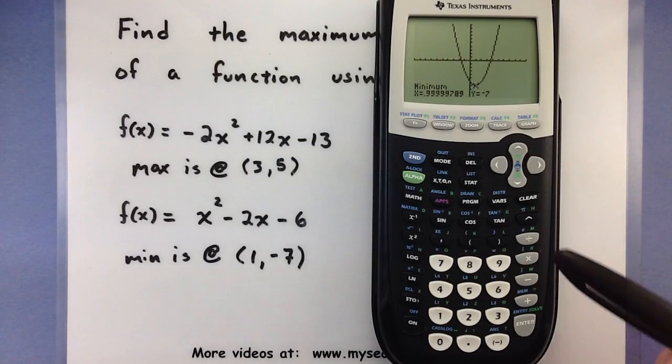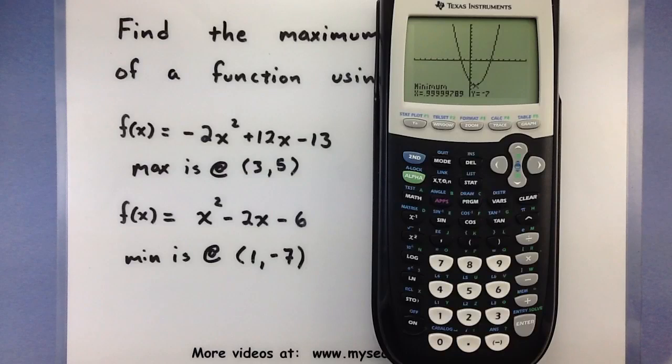And what the calculator is doing is it's going through a numerical method and it's getting a place that's really close to the max and min, but sometimes it will be off by a few decimal places. So it's always good to round these, that way you get a good idea as to what the actual max or min is.